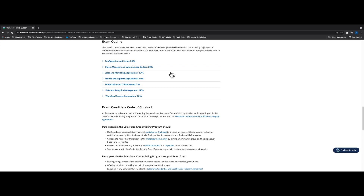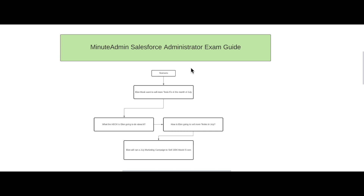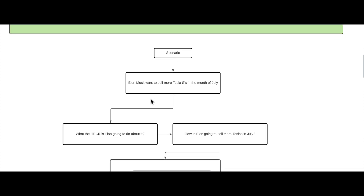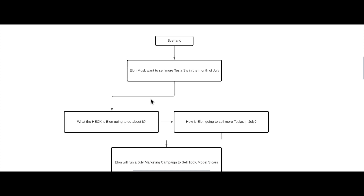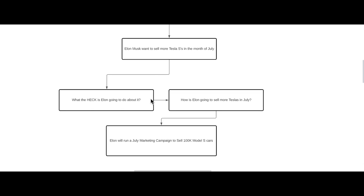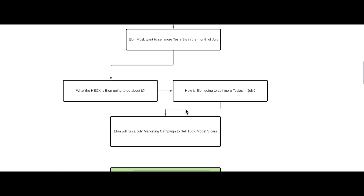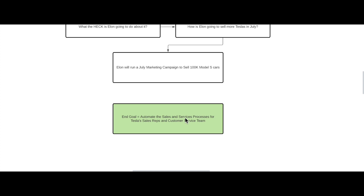Let's go to the actual breakdown in the Lucid chart I created for you. The Lucid chart is based off a real-world Salesforce scenario: Elon Musk wants to sell more Tesla Model S's in the month of July. He's going to run a July marketing campaign to sell a hundred thousand Model S cars. The end goal for Elon is to automate the sales and service processes for Tesla sales reps and the customer service team.